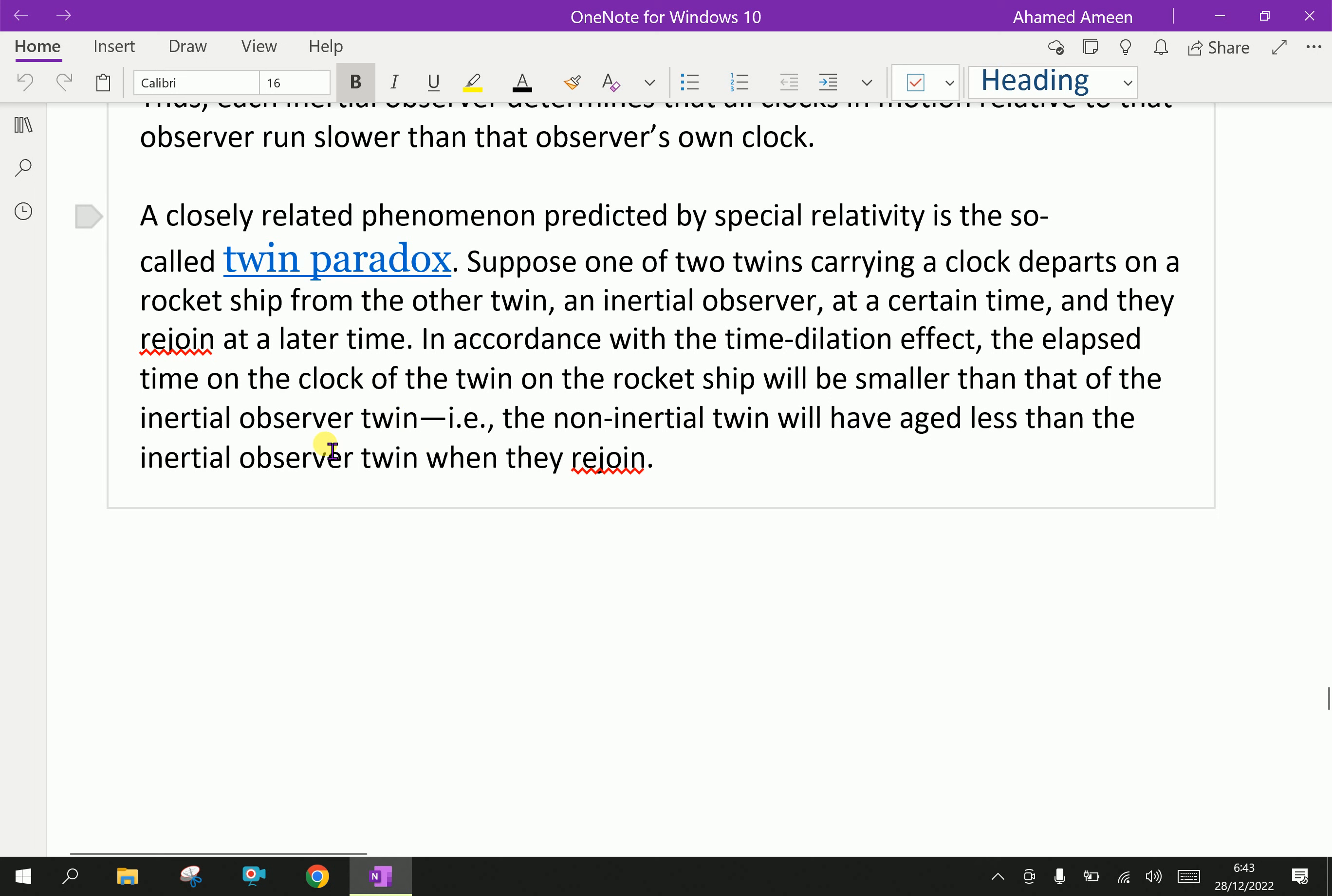In accordance with the time dilation effect, the elapsed time on the clock of the twin on the rocket ship will be smaller than that of the inertial observer twin. That means the non-inertial twin will have aged less than the inertial observer twin when they rejoin. That means whoever is moving faster and comes back to meet their twin, whoever is moving fast has less age than who stays in the air. That means moving faster, while moving faster the clock will slow down.